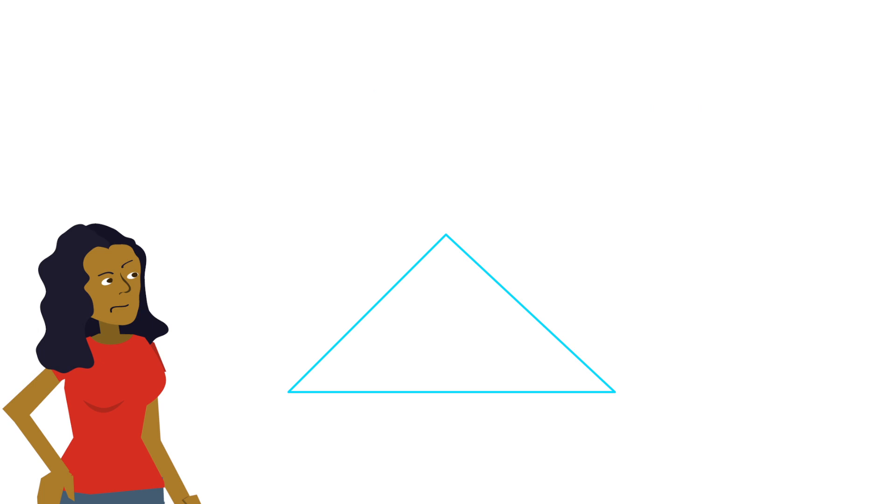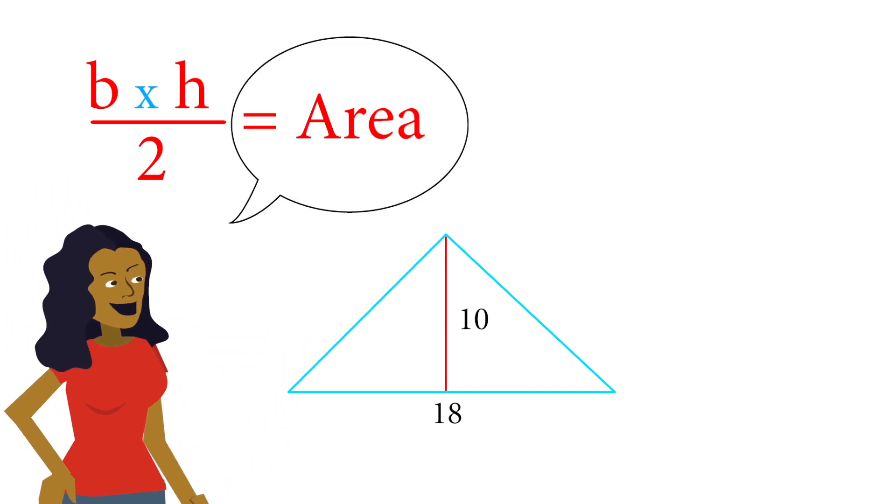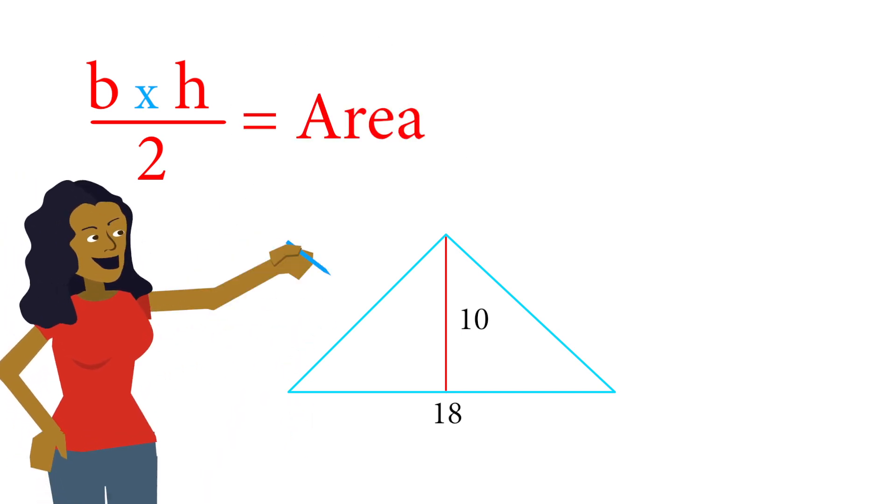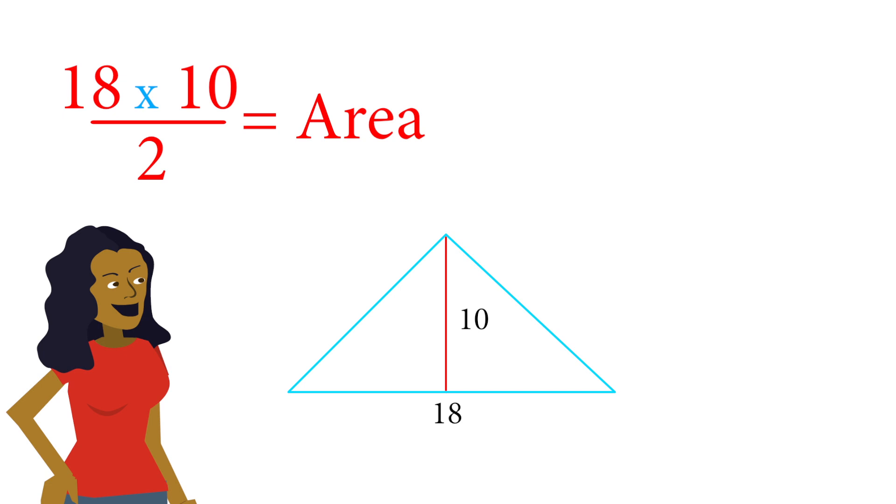In the past, if we had a triangle where we knew the base and the height of the triangle, let's do an example where the base is 18 and the height is 10, then we could find the area of the triangle because we had a formula, one-half base times height, or in this case, one-half of 10 times 18. We would calculate the area of the triangle to be 90 square units.